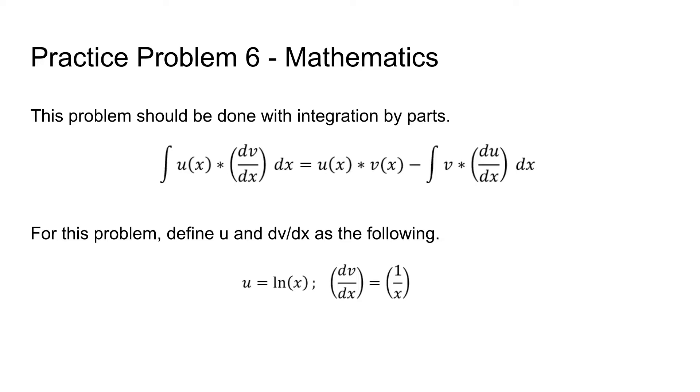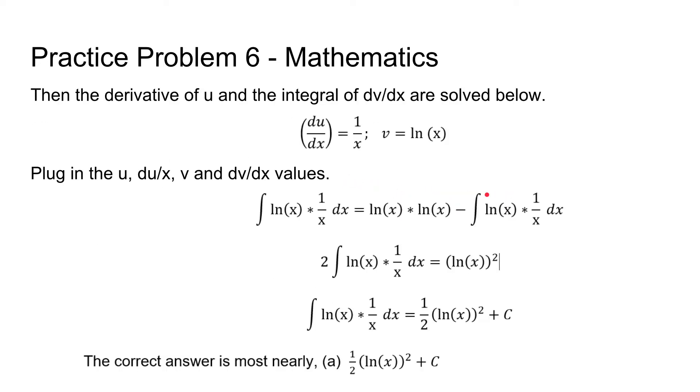Once you've established what is on the left hand side then you can solve for the right hand side. So what I like to do is to just solve for the derivative of u(x) which is going to be equal to 1 over x.